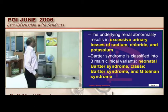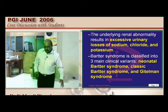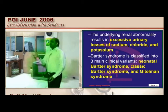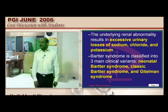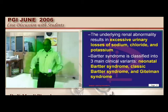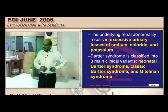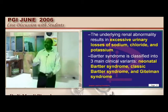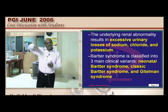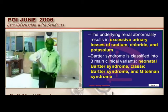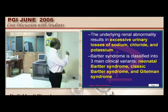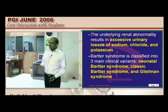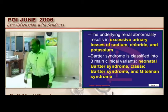The primary event in Bartter is sodium and chloride loss, which stimulates JGA to produce excess renin and aldosterone. The secondary event is excess aldosterone causing further potassium loss and hypokalemia. Despite high aldosterone levels (which should cause hypertension), blood pressure is normal — a very important clinical feature clinching the Bartter diagnosis.